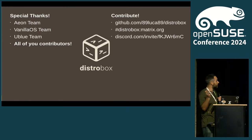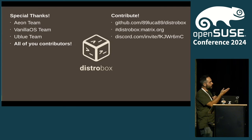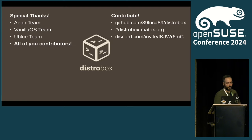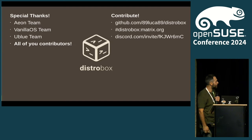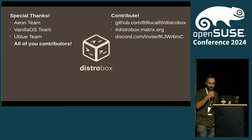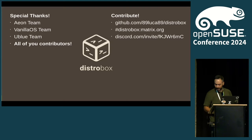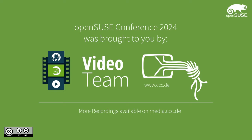Special thanks to the Aeon team, VanillaOS team, the uBlue team, and all the 150-something contributors that contributed to DistroBox in these two years. DistroBox is on GitHub at 89Luca89/DistroBox. We have a Matrix channel and a Discord channel — we used to have a Telegram channel but Telegram didn't like my account, so there isn't one anymore. That was DistroBox, thank you, and I'm open to questions.